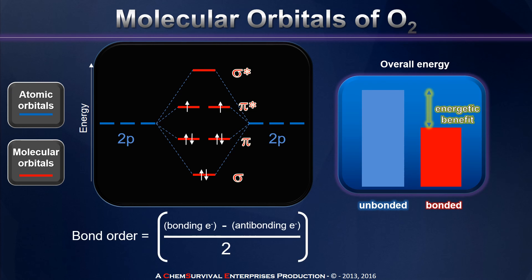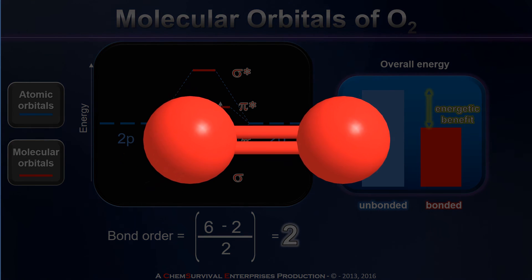If we calculate the total bond order of oxygen using six bonding electrons and two antibonding electrons, we find that the six and the two leads us to a calculated bond order of two. Oxygen exists as a diatomic molecule with a double bond.